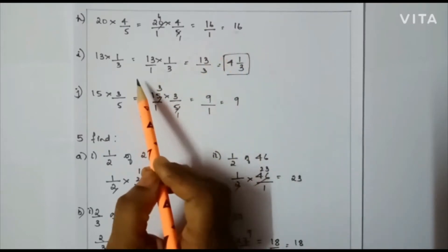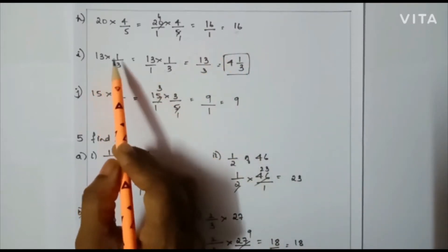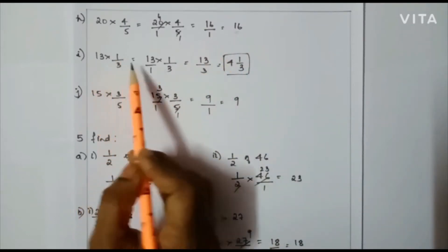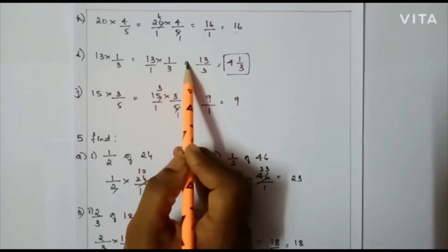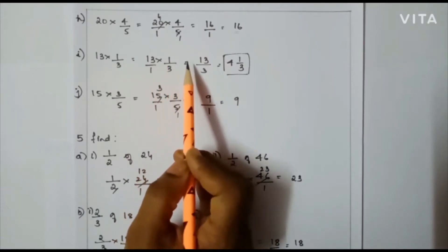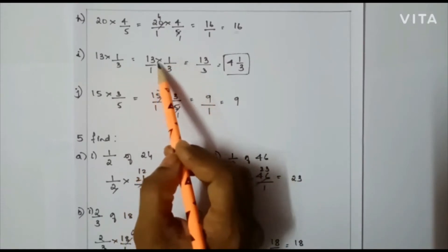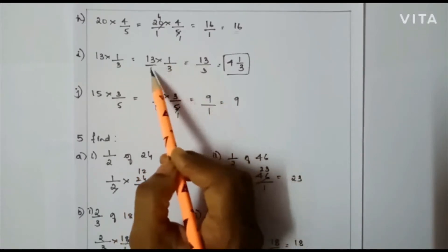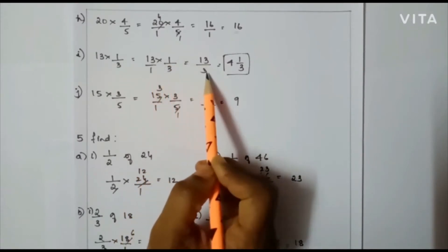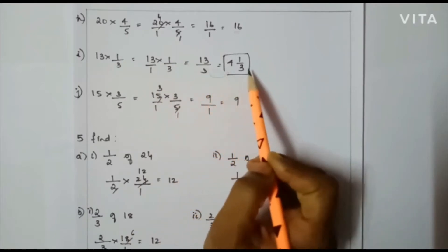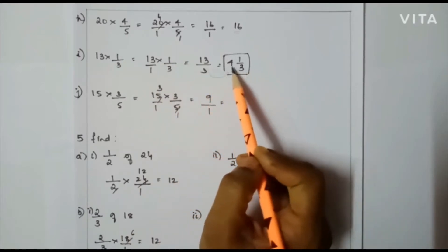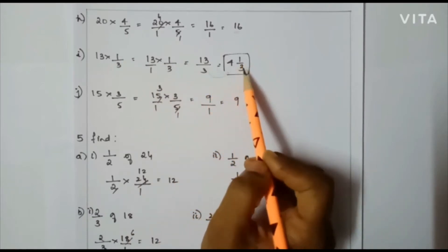Next: 13 × 1/3, that is 13/1 × 1/3. Here I can't cancel. So 13 × 1 = 13, and 1 × 3 = 3. If I convert this to a mixed fraction I will get 4 and 1/3.